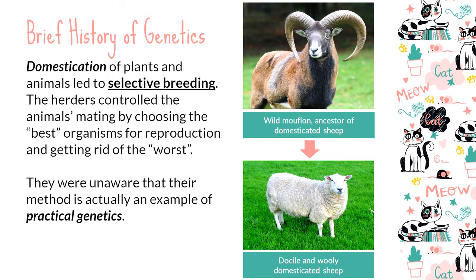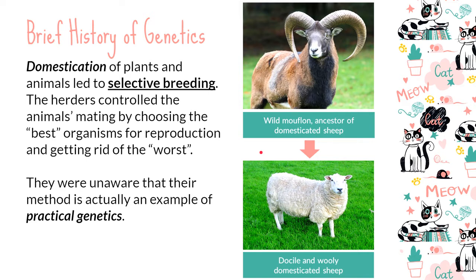They made the best organisms reproduce while getting rid of unwanted characteristics. For example, they were able to domesticate the wild mouflon, the ancestor of domesticated sheep. Through selective breeding, over successive generations, they removed undesirable traits such as long horns, aggressive behavior, and dark fur, producing the docile and woolly domesticated sheep we know today. Our ancestors were unaware they were actually applying practical genetics. They also did this with pigs — whose ancestors are wild boars — and dogs, which are descendants of wolves.